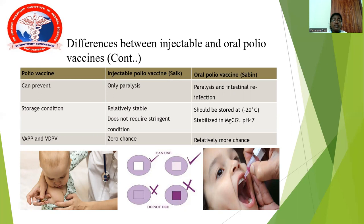The vaccine vial monitor indicates: if the inner square region is white and the outer circle is blue, the vaccine can be used (first and second pictures). If the inner square region is blue and similar to or darker than the outer circular region, the vaccine should not be used or should be discouraged (third and fourth pictures).